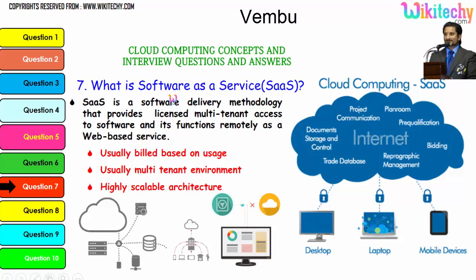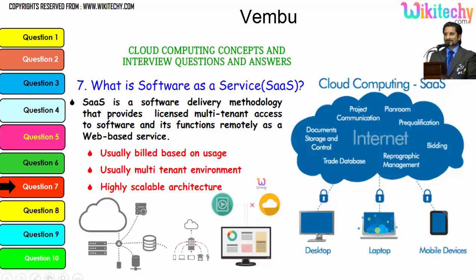Software as a service — SaaS — is a software delivery methodology that provides licensed multi-tenant access to software, and it functions remotely as a web-based service. It is usually billed based on usage, operates in a multi-tenant environment, and uses a highly scalable architecture. You rent software from the cloud and use or access it via a browser — that's software as a service.